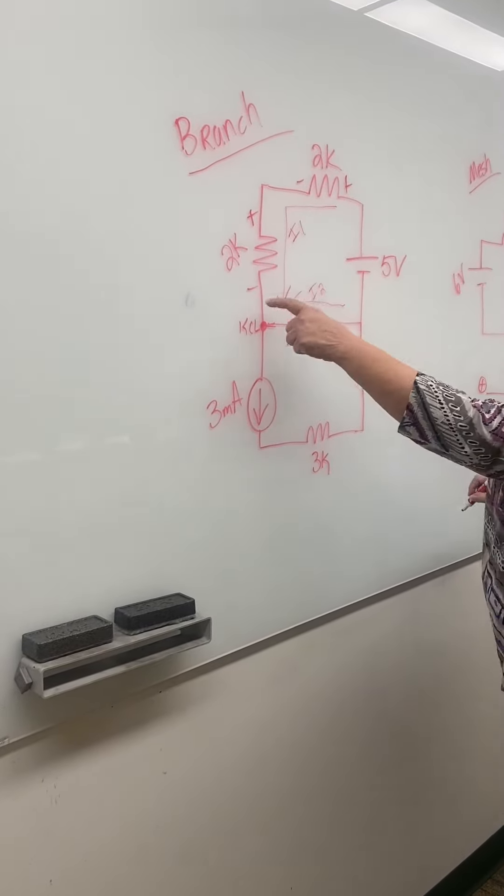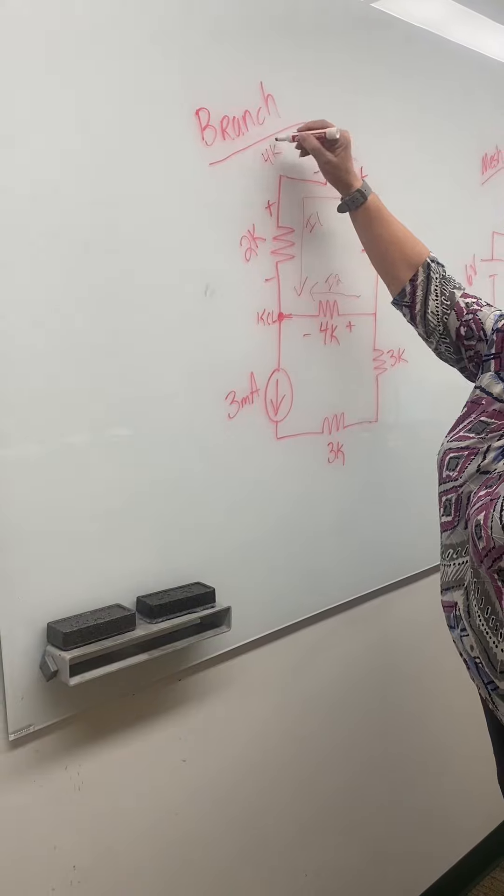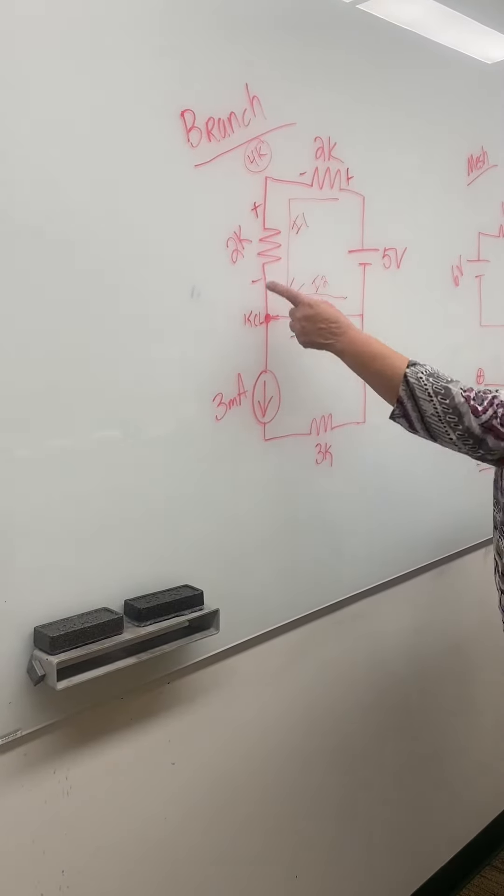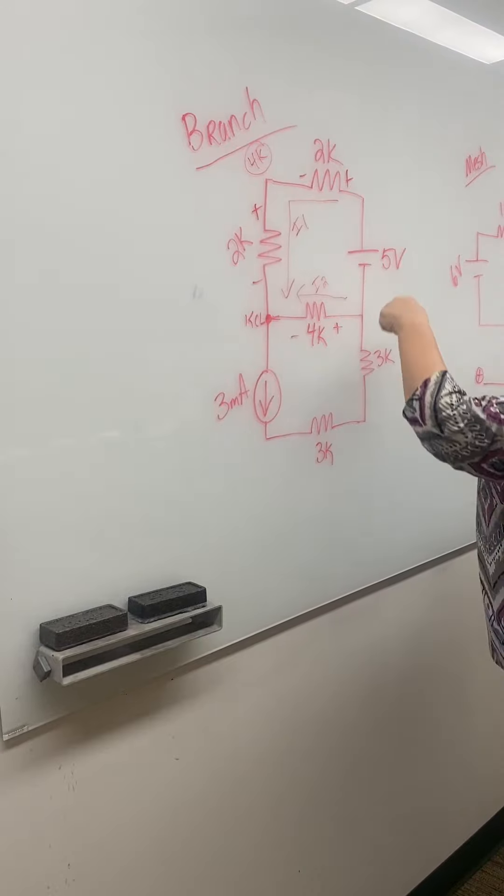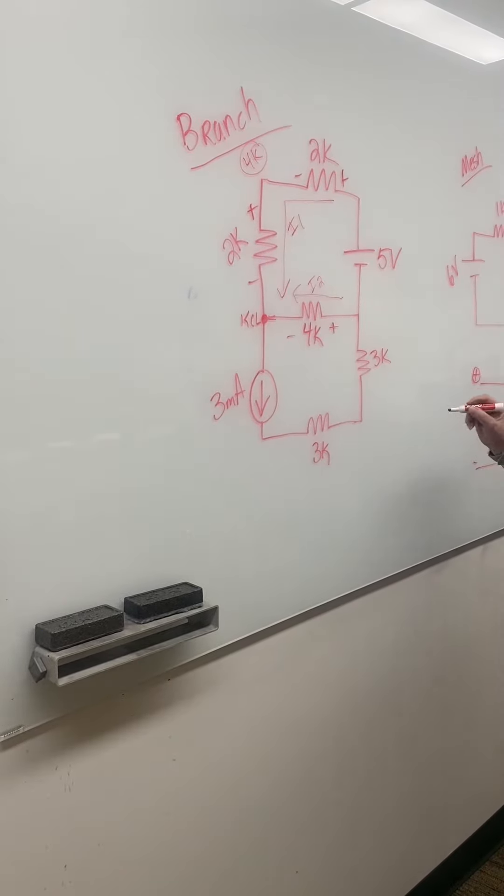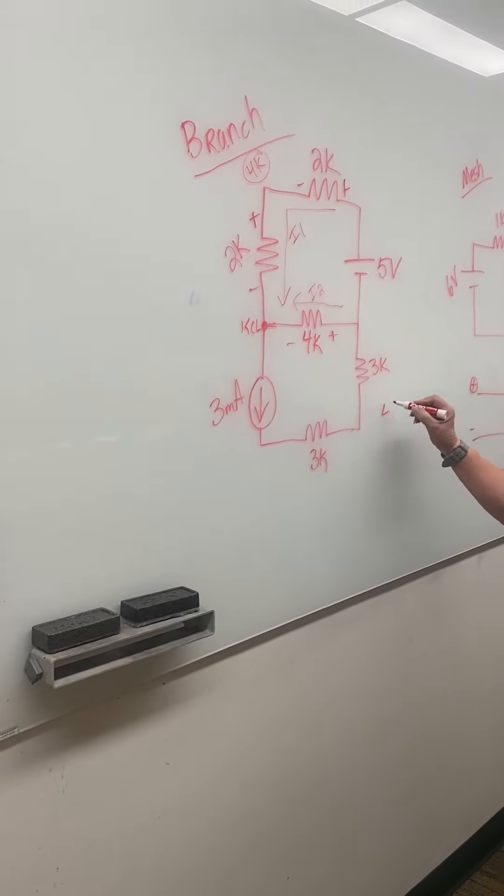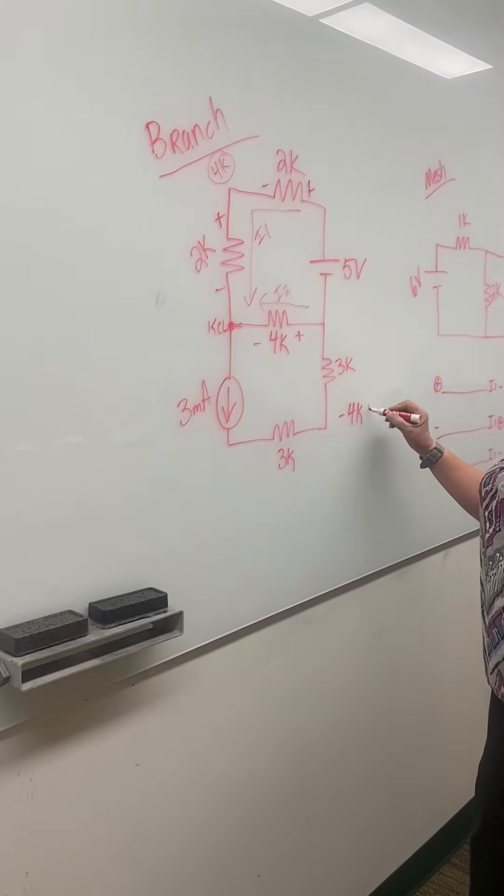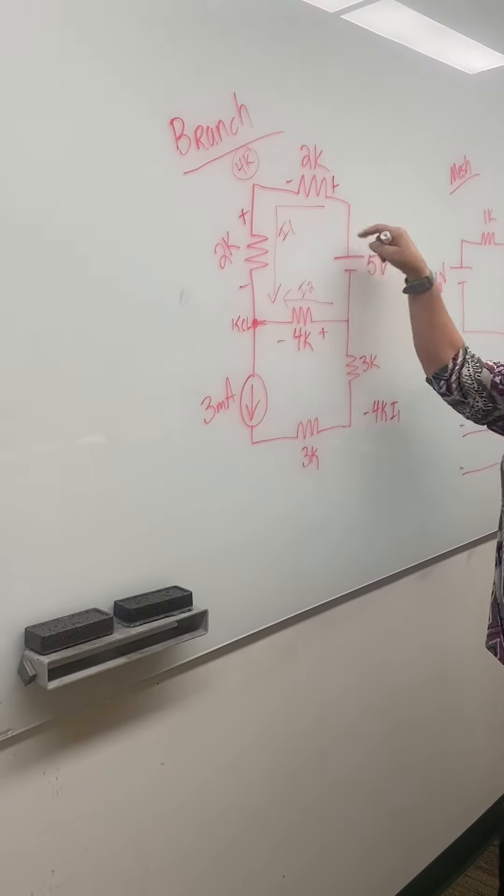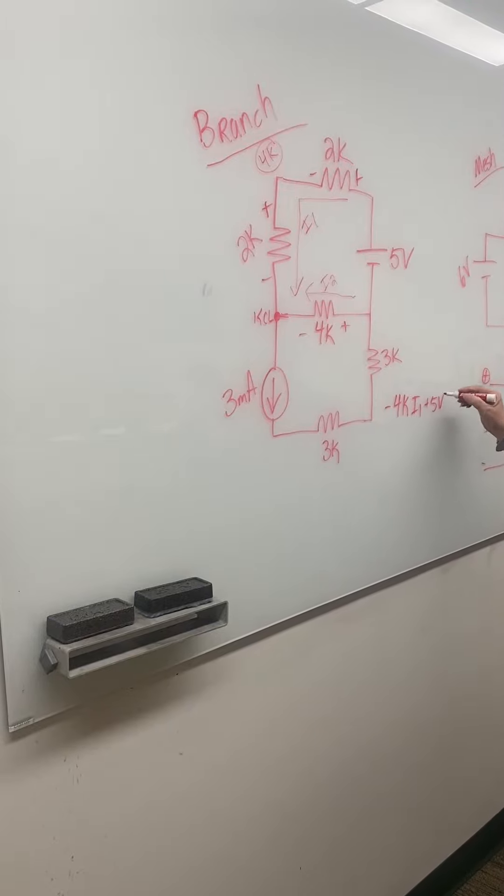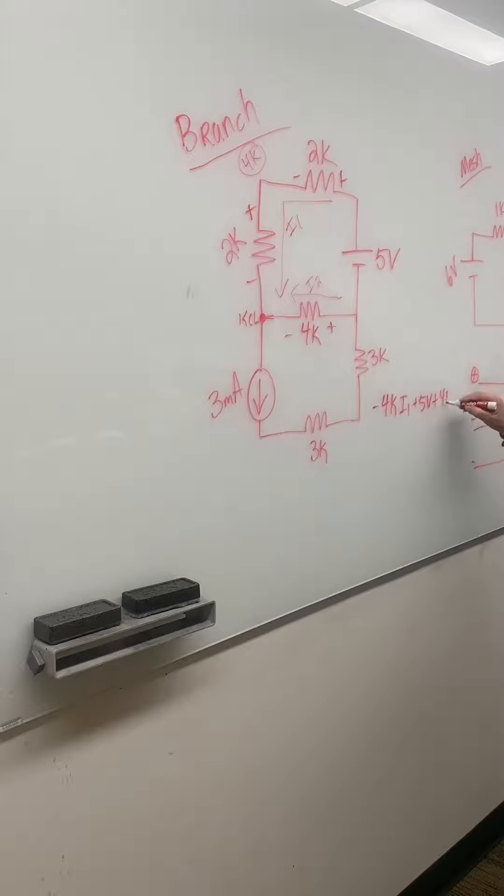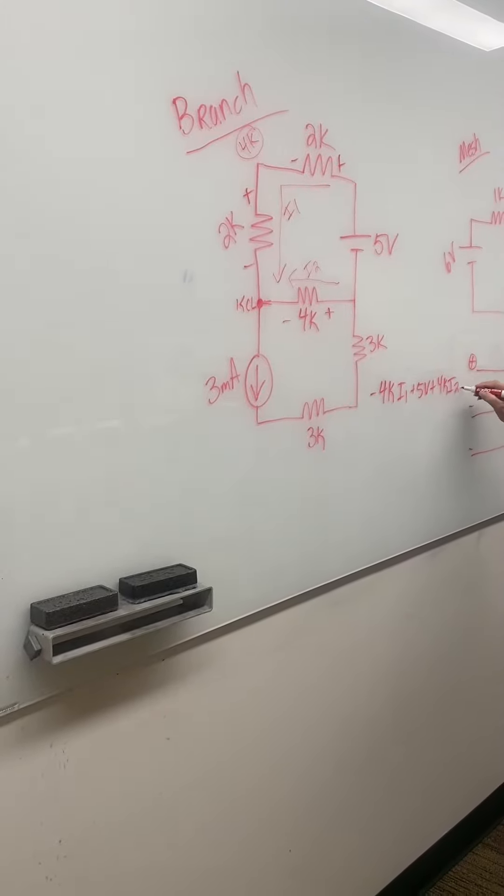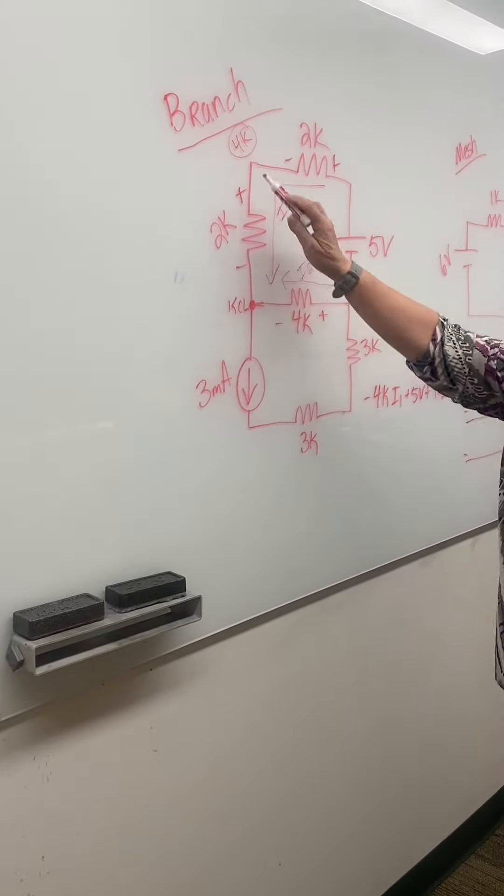Okay, so I'm going to add these two together because it's 4K. And since I always write my KVLs at the top left and go clockwise, so I'm going to write negative 4K I1 plus 5 volts plus 4K I2 equals 0 because I'm back to the spot.